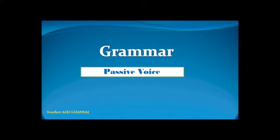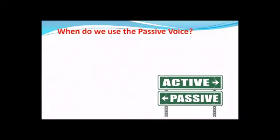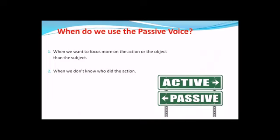Hello students, I hope you're doing great. Today we are going to explain the passive voice, which is a lesson in module number four. We use the passive voice when we want to focus more on the action or the object than the subject — what really happened matters, not the doer. Number two: when we don't know who did the action, the doer is anonymous. These are two cases in which we use the passive voice.